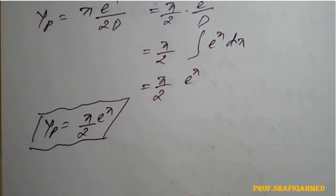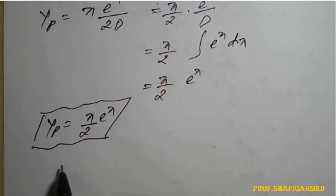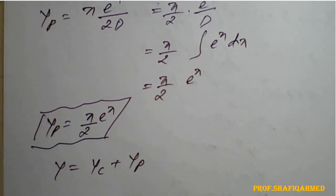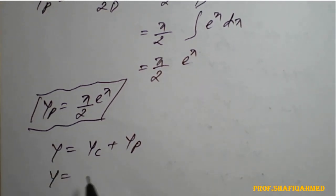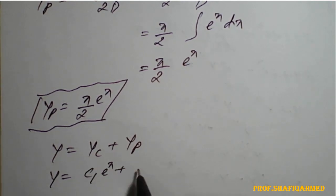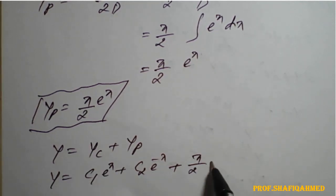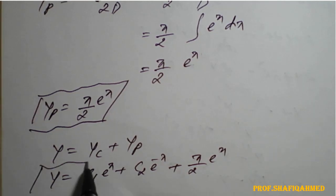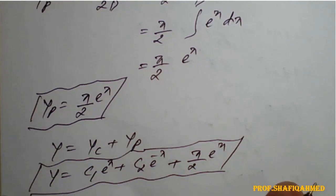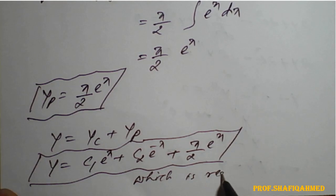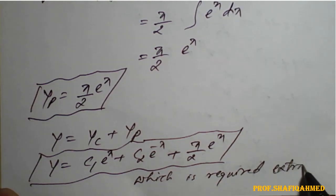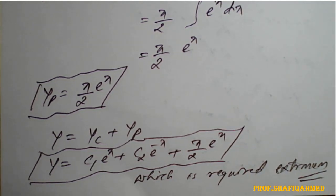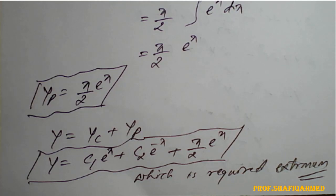The final solution of the given functional is y equals yc plus yp, which is c₁eˣ plus c₂e^(−x) plus (x/2)eˣ. This is the required extremal. By using the solutions of differential equations in this way, we can find the extremal of the given functionals.